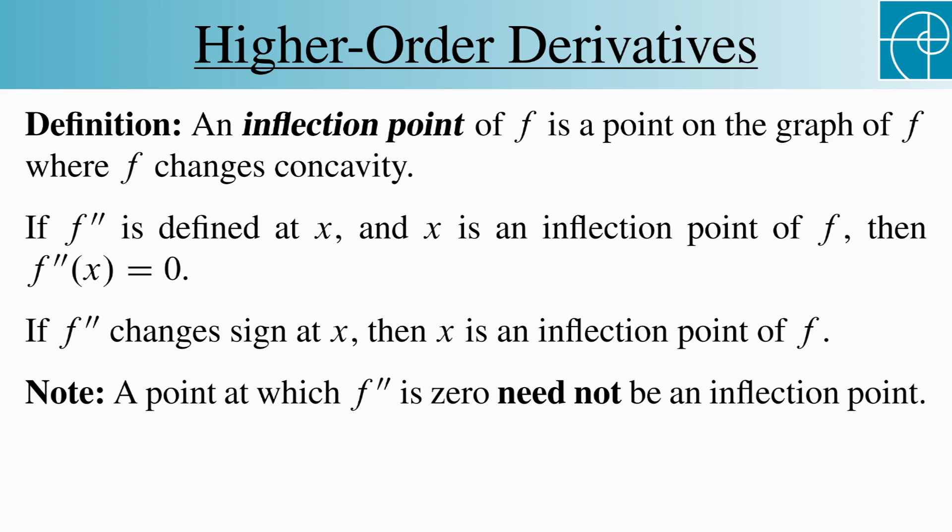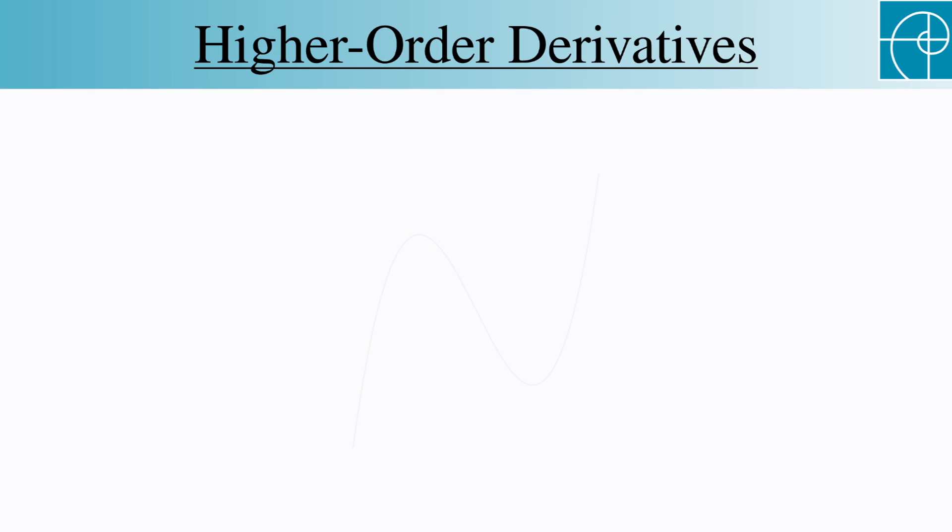Second derivatives can also be used to help us categorize local extrema. Let's look at this graph. We see a local maximum here, which we determined earlier by finding a horizontal tangent line and seeing that the first derivative changes sign at that point.